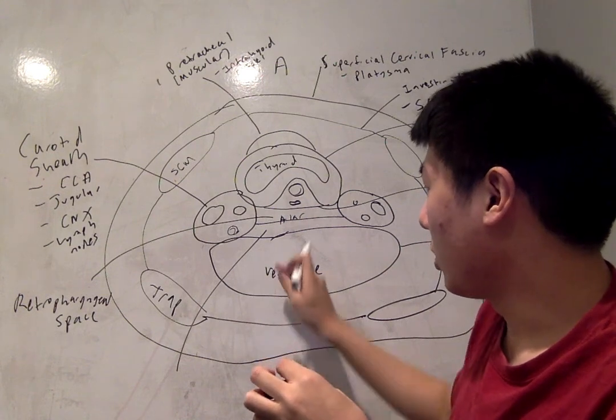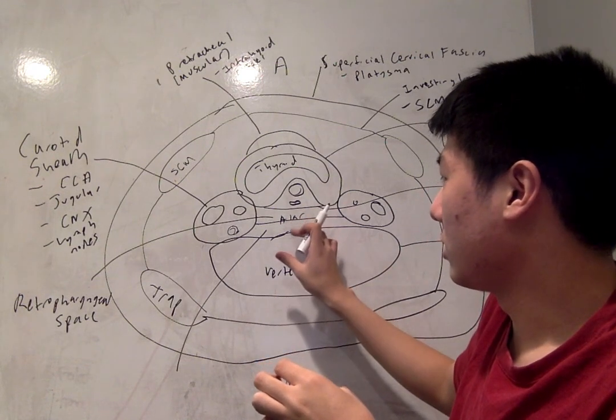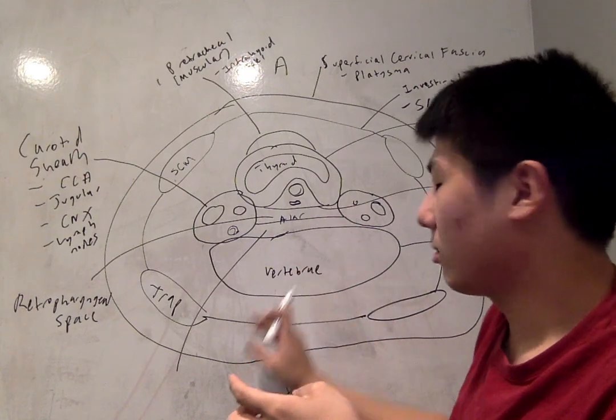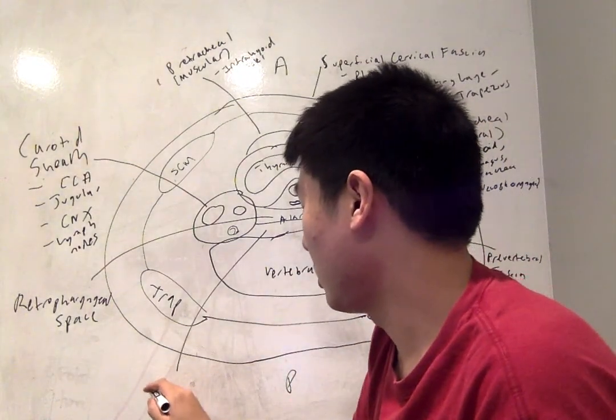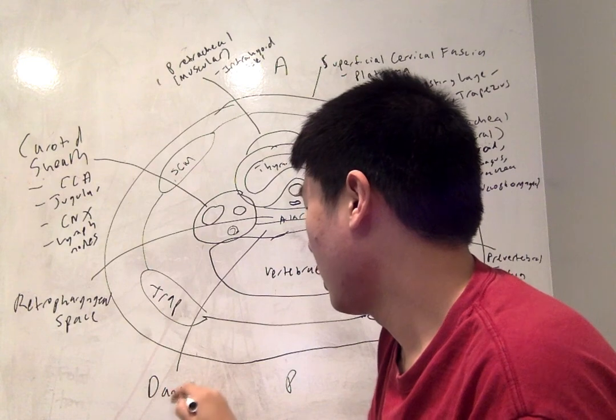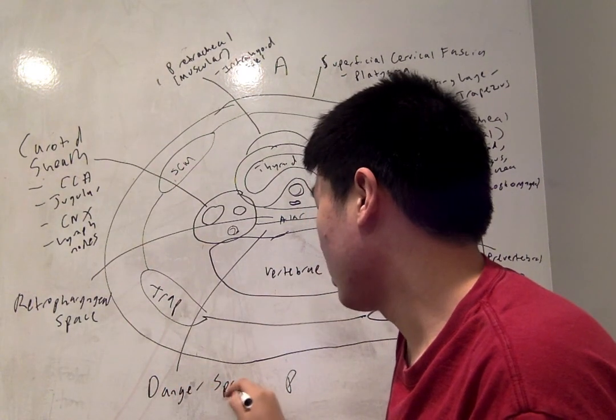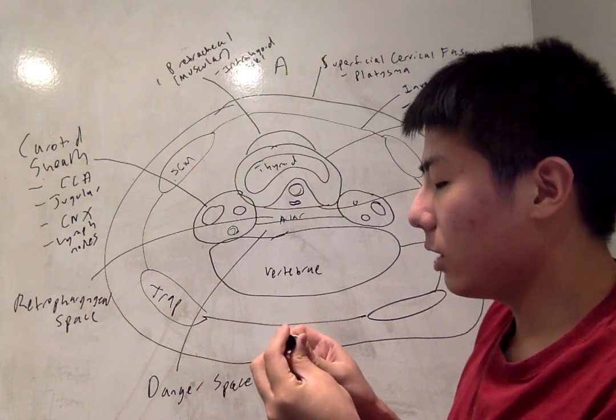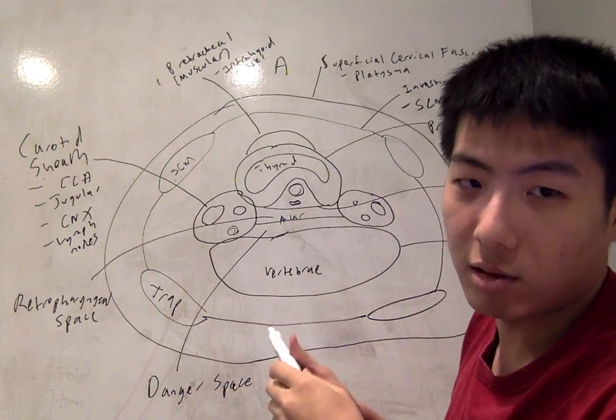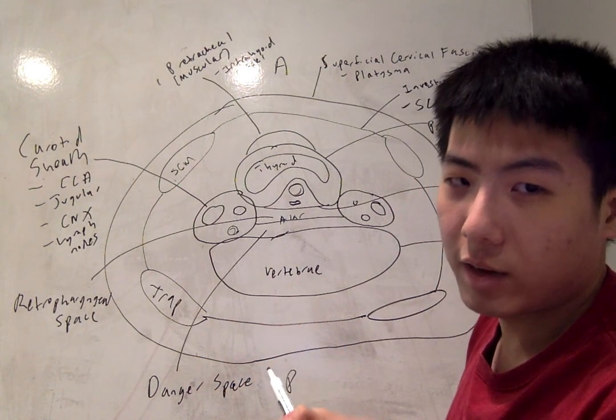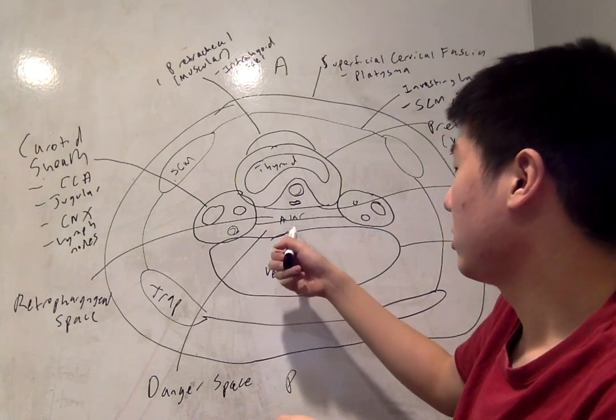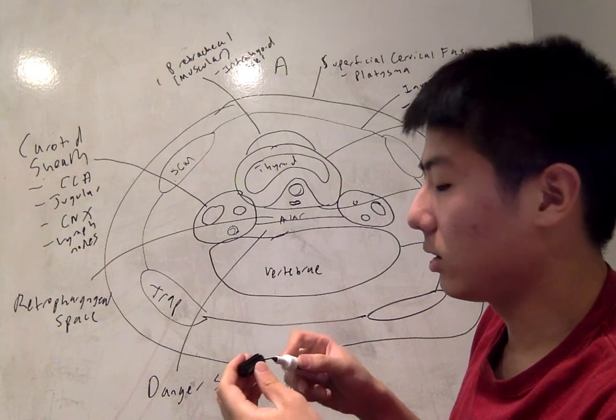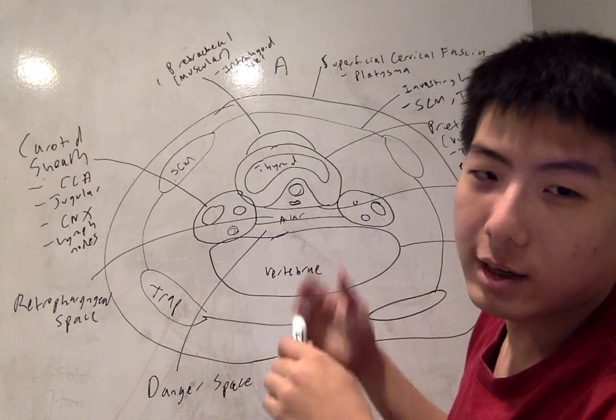The posterior compartment formed by the alar fascia and the prevertebral fascia is called the danger space. The anatomical danger space of the neck is so named because it communicates directly with the thorax. So infections can take a route through the danger space and spread straight into the mediastinum, which is bad, as you might imagine.